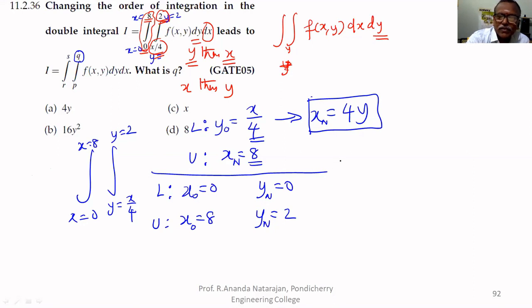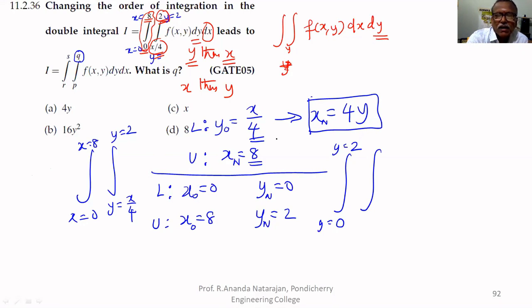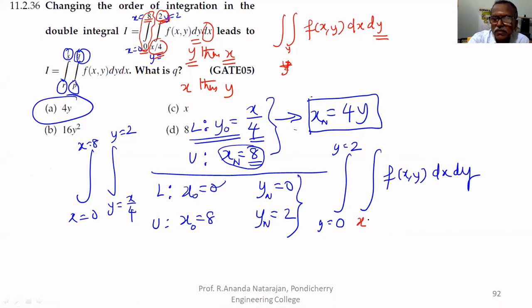So while writing the new integral, the final outer integration goes from y equal to 0 to y equal to 2. For the inner integration, since we are doing x first, the limits for x have to be substituted: the lower limit is x equal to 4y and the upper limit is x equal to 8. Therefore what is asked — what is the value of q — q is 4y.